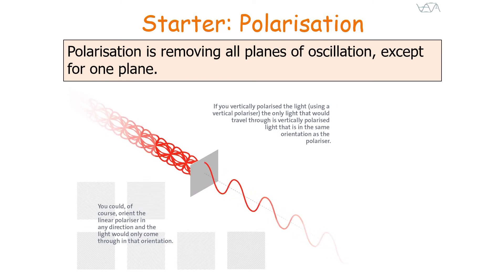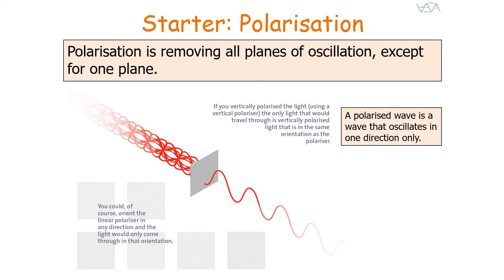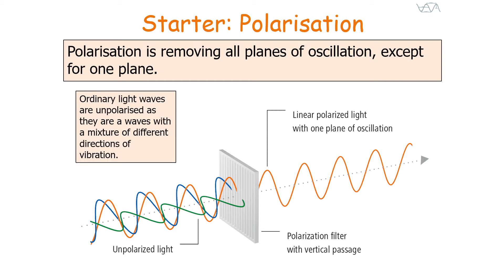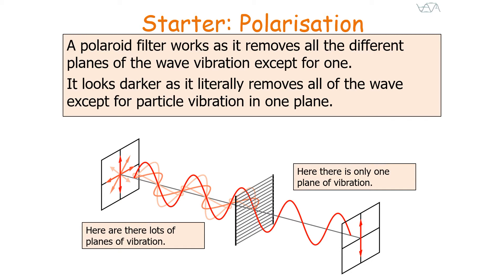Polarisation is removing all planes of oscillation except for one plane. So a polarised wave is a wave that oscillates in one direction only. A polaroid or polarising filter can be used to polarise a wave. Ordinary light waves are unpolarised because they contain a mixture of different directions of vibration. A polaroid filter removes all the different planes of wave vibration except for one, making it appear darker as it literally removes all particle vibration except in one plane.